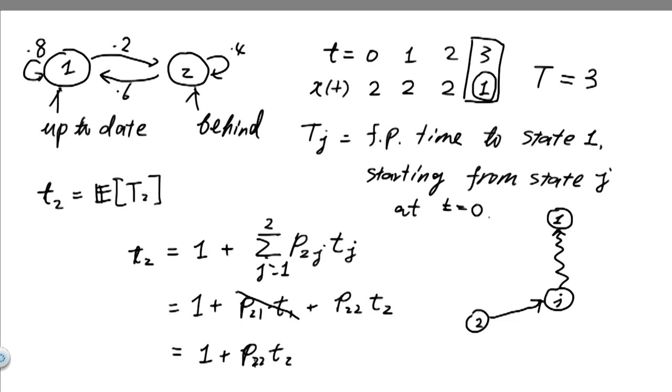And we end up with 1 plus p22 times t2. If we plug in the number for p22, which is 0.4 right here, we get 1 plus 0.4 t2. Now we started from t2 and we ended up with another expression involving numbers and only the one unknown, which is t2. Combining this together and solving for t2, we get t2 equals 1 divided by 1 minus 0.4, which is 5 over 3. And that is the answer for the first part of the problem.